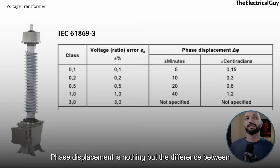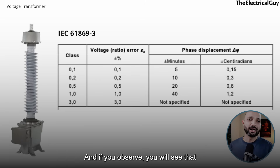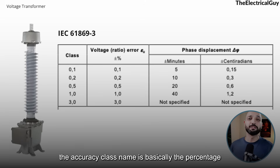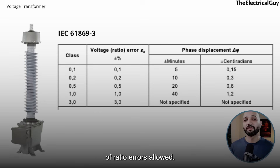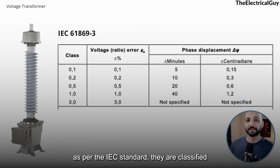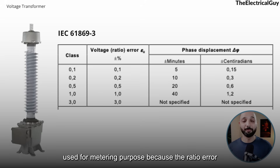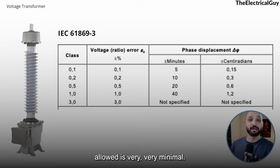Phase displacement is nothing but the difference between the primary and secondary current and voltage vectors. If you observe the table, you'll see that the accuracy class name is basically the percentage of ratio error allowed. So when a core has a ratio error of 0.2%, it is classified as a 0.2 class core, which is used for metering purposes because the ratio error allowed is very minimal.